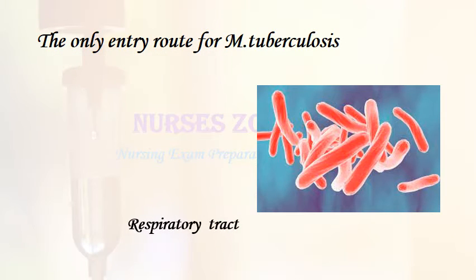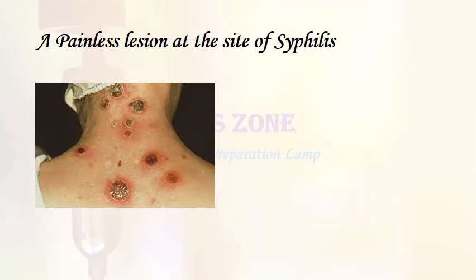The only entry route for mycobacterium tuberculosis: respiratory tract. A painless lesion at the site of syphilis entry: chancre.